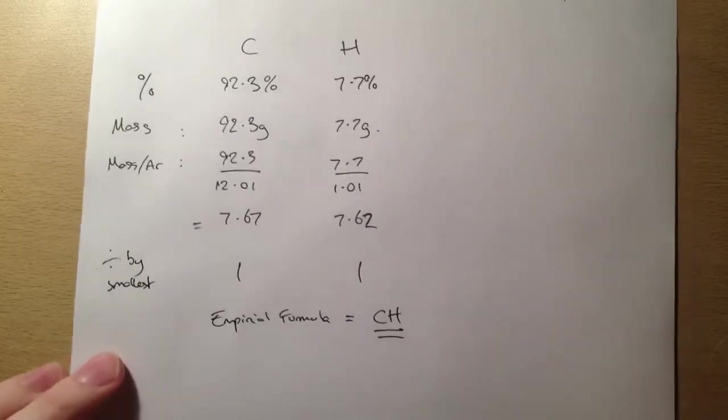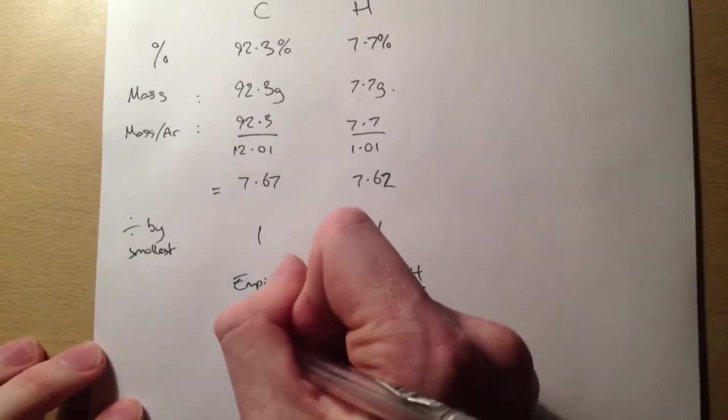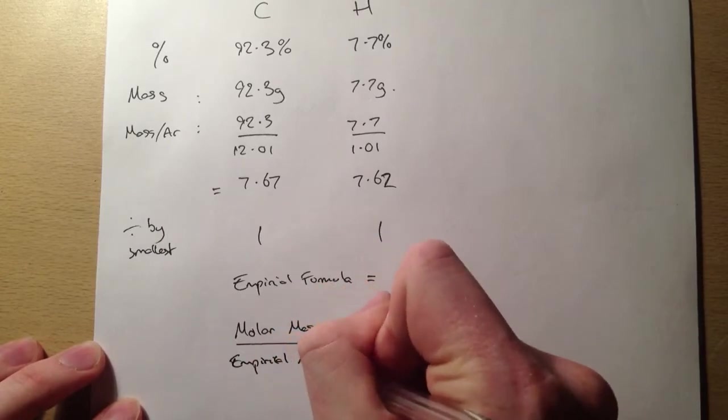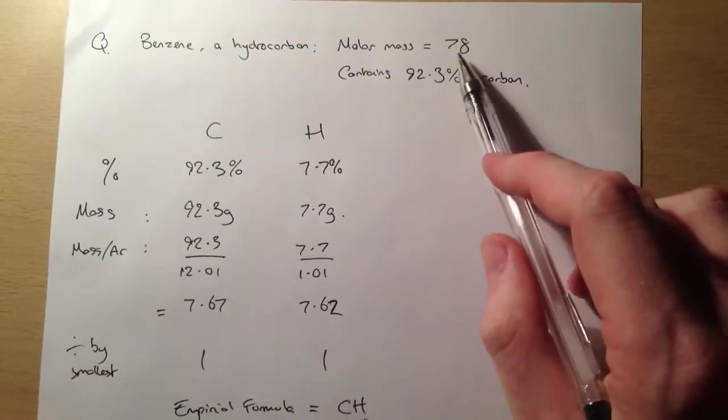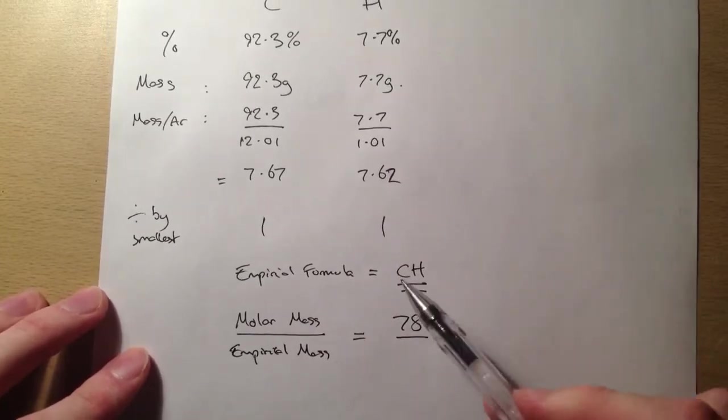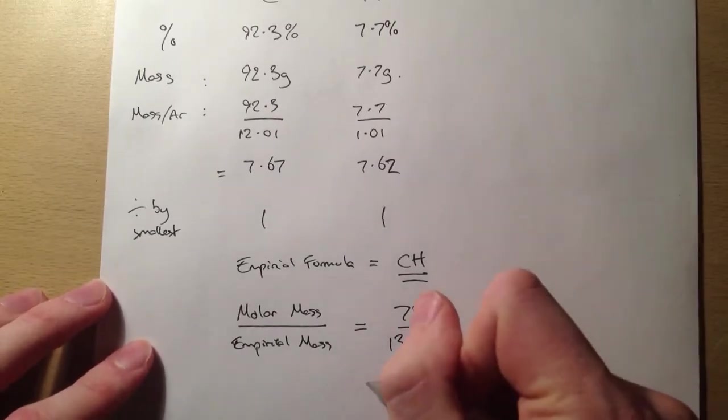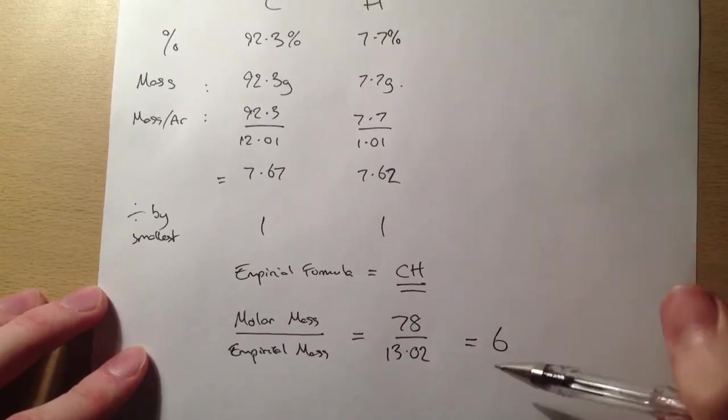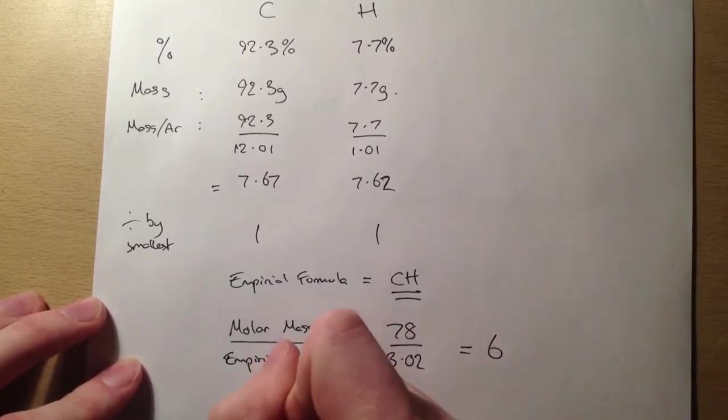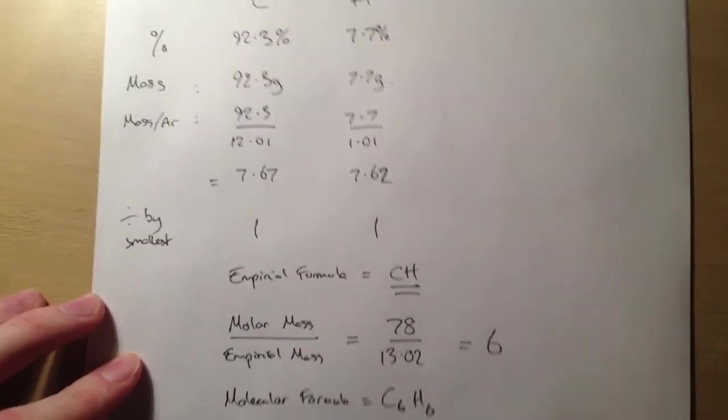The simplest whole number ratio of elements that are in there. So we're going to use the same process now to figure out the molecular formula. So remember the molar mass divided by the empirical mass. That's what we're doing here. So we're told that the molar mass is 78 divided by the empirical mass. Carbon is 12.01, hydrogen is 1.01, so we've got 13.02. So when you do that, you get 6. So in order to find the molecular formula, then, we're going to do 6 times CH. So we're going to get C6H6 is our molecular formula. Boom. Easy.